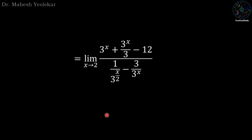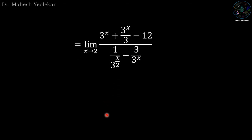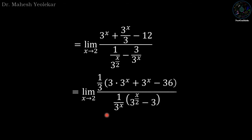Now if we take 3 as a common factor in the numerator and 3^x as a common factor in the denominator, then we have 1/3 times (3·3^x + 3^x - 36). In the denominator we have 1 over 3^x times (3^(x/2) - 3).